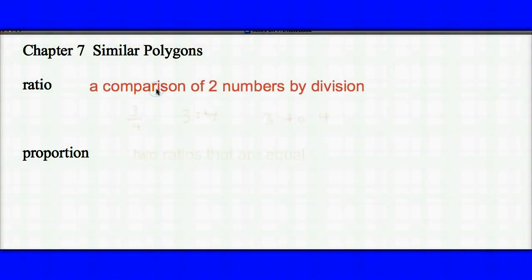First of all, a ratio is a comparison of two numbers by division, and there's three main ways that we see ratios written. We can see it written as a fraction, or with a colon, or written with the word to.